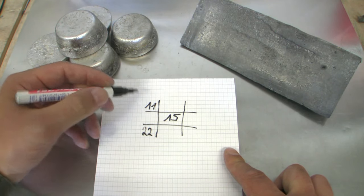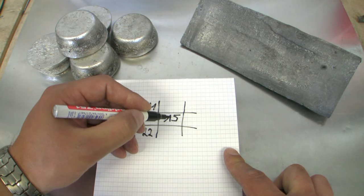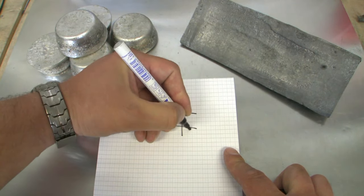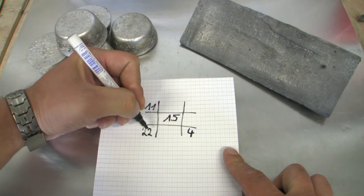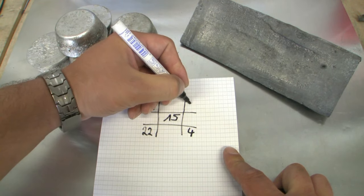Now I calculate diagonally the differences. 15 to 11, the difference is 4, and from 22 to 15, 7.